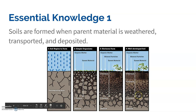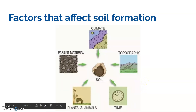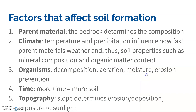Soil is, for lack of better words, done forming when we start to see these distinct layers. Things that affect soil formation are climate, topography (the shape of the land), time, plants and animals, and parent material. The parent material is whatever bedrock it was — that's going to determine the composition, the chemical components, and things like that. It can be more like a quartz-y type of sand, or it will have other types of elements to it.